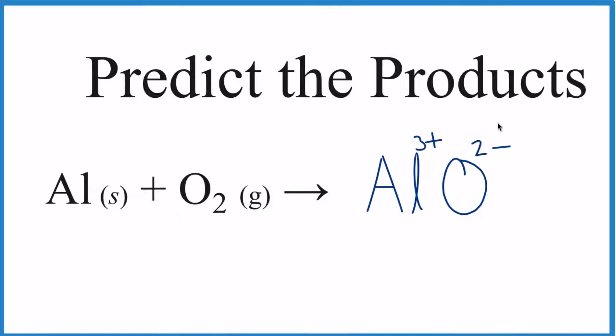What we can do is use the crisscross method. We move the 2 here and the 3 here, get rid of these charges, and Al2O3 - that's the formula for aluminum oxide, and the charges balance out. There's a link at the end of this video if you need help doing that. This equation isn't balanced yet.